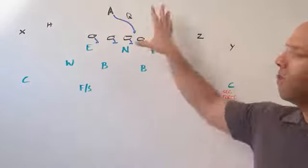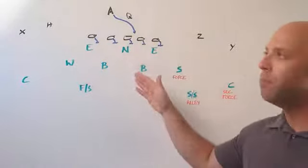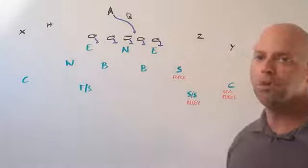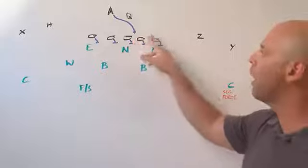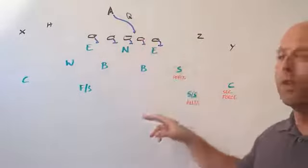So what we're looking at here is a very simple zone read play, but we're actually going to cut out the read part of it. We'll just assume that it's a give. We've got our zone blockers up front. Everybody is zone blocking to their left for the offensive linemen.